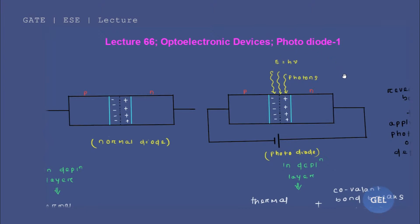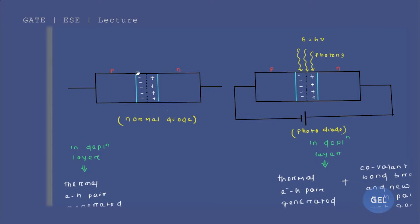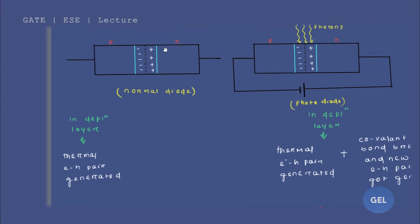If there is any point you couldn't understand, please rewind this video. Now let's get started. Look carefully — we have taken a normal diode. This side is the P-side, this side is the N-side, this is the junction, and this is the depletion layer. These are the immobile ions forming the space charge region. Due to these immobile ions, there is generation of thermally generated electron-hole pairs in the depletion layer.